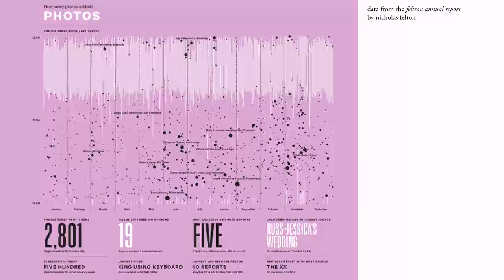Another example from Nicholas Felton, from his Feltron Annual Report — which are quite popular — this piece documents the date, time, and number of photos taken through the course of one year. The text below the main chart details a range of significant facts about the photos that were taken.